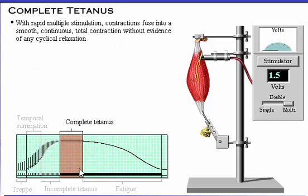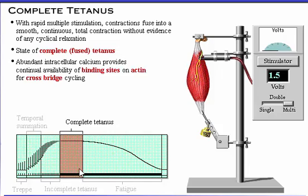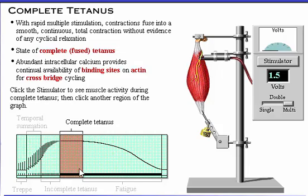With rapid multiple stimulation, the contractions fuse into a smooth, continuous total contraction without evidence of any cyclical relaxation. The muscle is now in a state of complete or fused tetanus. Abundant intracellular calcium provides continual availability of binding sites on actin for cross-bridge cycling. Click the stimulator to see muscle activity during complete tetanus, then click another region of the graph.